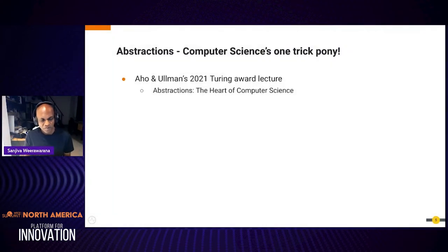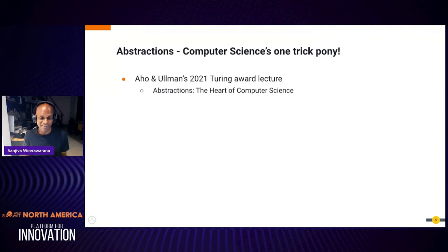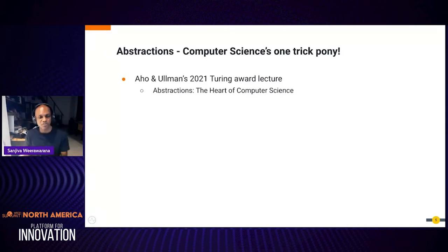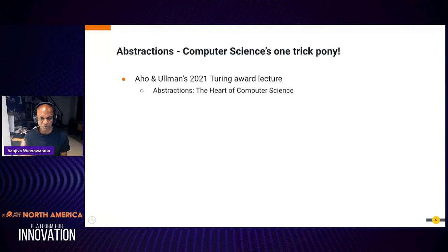Now let me go back to the other word in the title, which is about abstractions. There's a saying — abstraction is basically the only thing that computer science really does. If you look at everything computer science does, in many ways you can say we're just creating another layer of abstraction so we can think about the problem differently and solve it. This year's Turing Award went to Aho and Ullman who wrote the Dragon Book, and the title of their talk is 'Abstractions: The Heart of Computer Science.' It's certainly worth listening to.